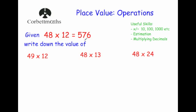Given that 48 times 12 is equal to 576, write down the value of the following. This time I've changed 48 to 49. Another way of looking at this: 48 lots of 12 is 576, so 49 lots of 12 is just one more lot of 12. So I'm going to add one more 12 onto my answer: 576 plus 12 gives 588.